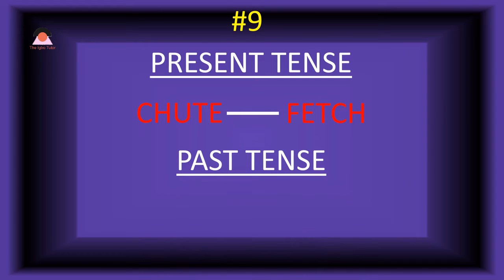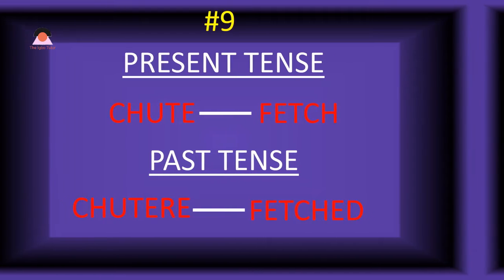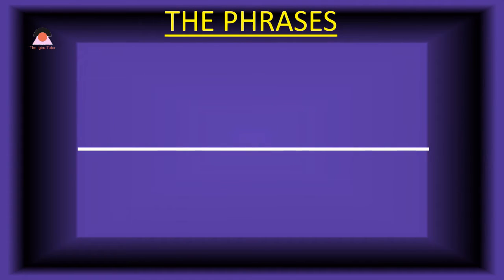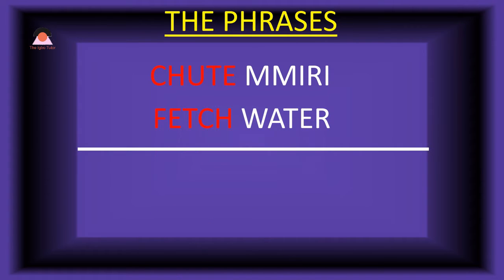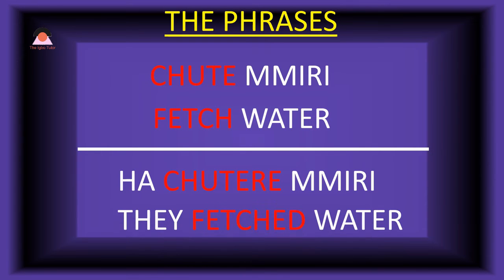Word number nine: 'chute,' meaning 'fetch.' The past tense of chute is 'chutere,' meaning 'fetched.' Present tense phrase: 'chute miri,' which means 'fetch water.' Past tense: 'ha-chutere miri' — they fetched water.